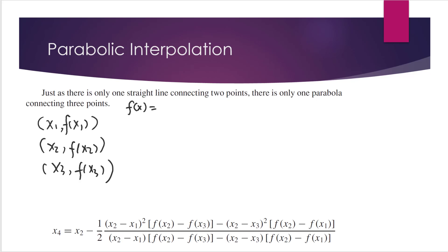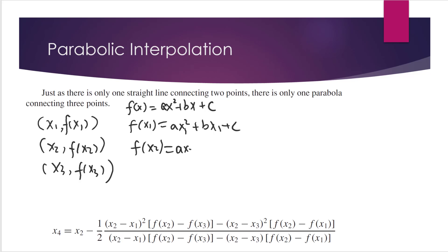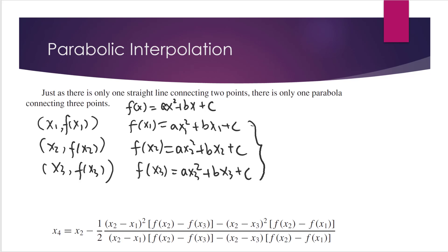We find a second-order polynomial connecting these three points. Assume that the second-order polynomial is f(x) = ax² + bx + c. We can plug in the first point: f(x1) = ax1² + bx1 + c. Then we plug in the second point: f(x2) = ax2² + bx2 + c. And then we plug in the third point: f(x3) = ax3² + bx3 + c. So we have a system of three equations with three unknowns — a, b, and c — so we can solve them exactly.